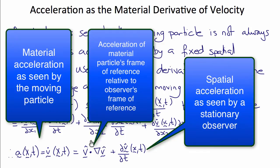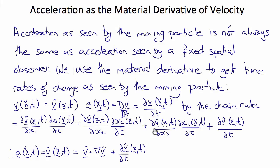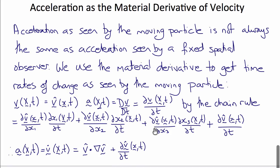Different particles moving at different speeds will give a fixed observer a different measure of acceleration than a moving particle. It is the acceleration as seen by the moving particle that determines its inertial force and physical quantities. The material derivative is something we'll come back to when we move to continuum mechanics.